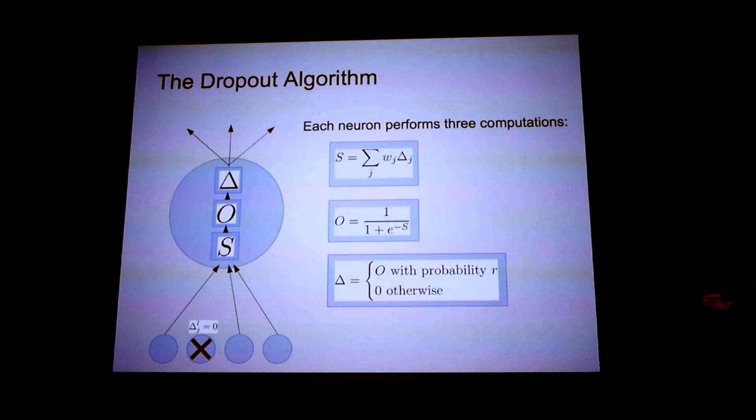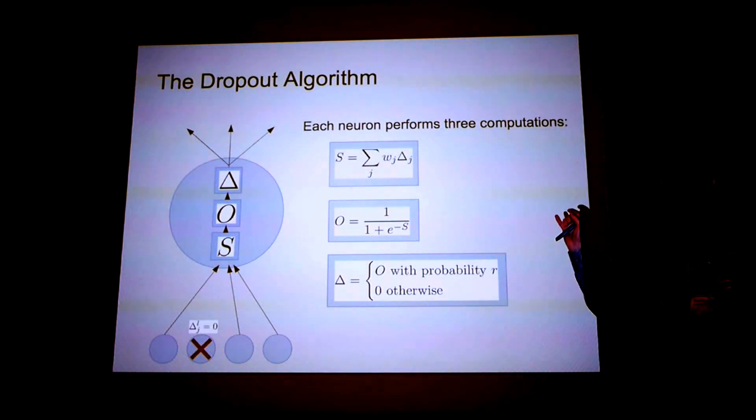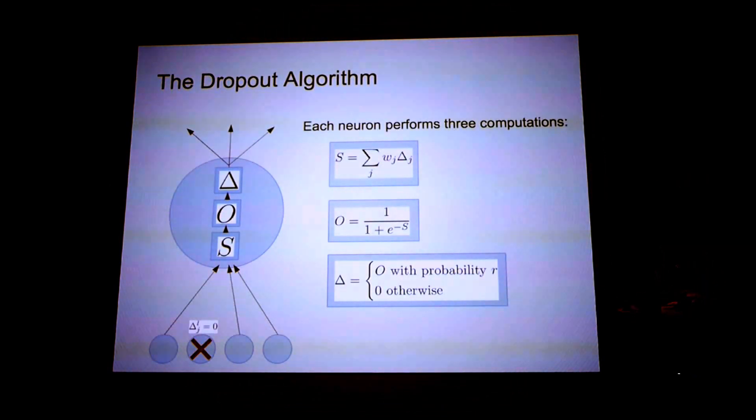So first I want to introduce this formalism. We can think about dropout as each neuron computing three different values. The first two values that we're computing are the standard deterministic computations of a neuron. We have S, which is the weighted linear sum of the inputs. The activation O is the output to the sigmoid function. So we're assuming logistic units.